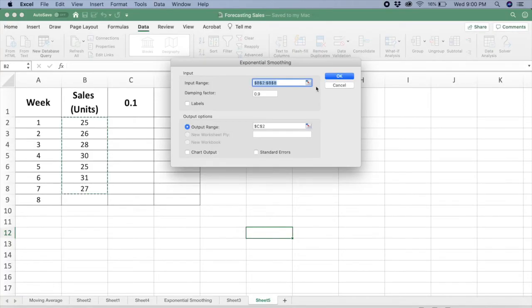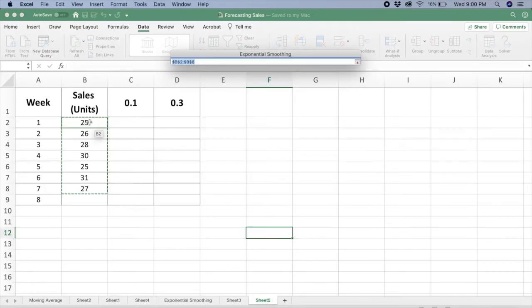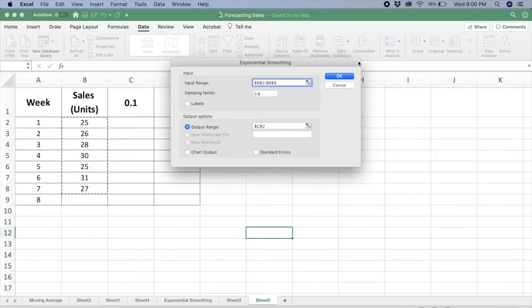Now we need to select our data. Select your entire data range here. So if you want to predict for week 8, now they have here damping factor. What do we mean by damping factor? As our alpha is 0.1, we won't key in 0.1.